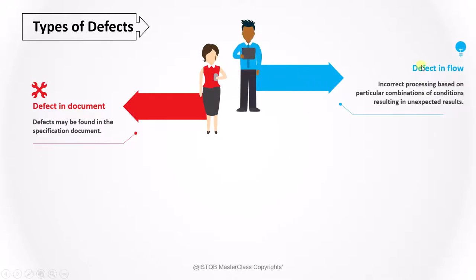The second point is defect in flow. Because cause-effect graph is nothing but showing the flow of the program. So if there is any problem with the flow, then you can find it out. Incorrect processing based on particular combinations of conditions resulting in unexpected result. So if you have different combinations which is resulting in some other result, you can find it out using a cause-effect graph.